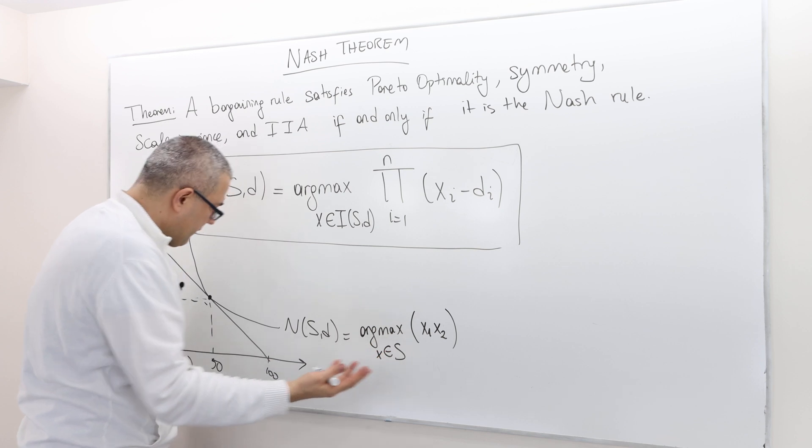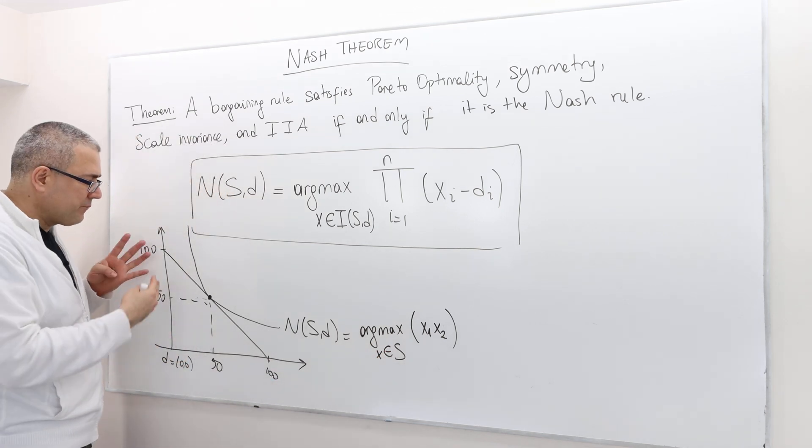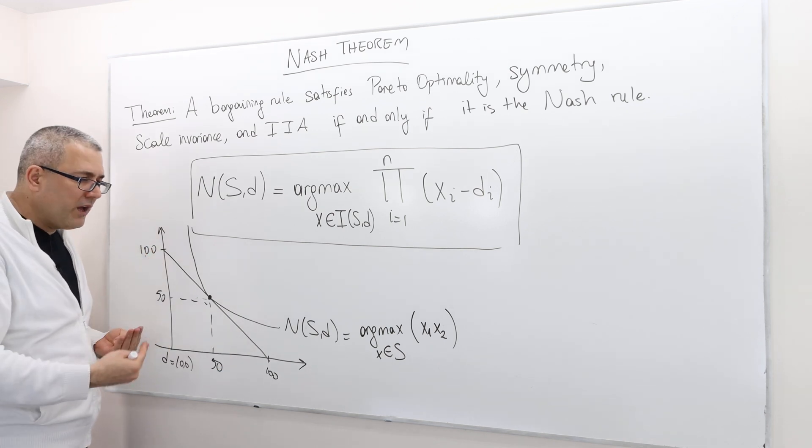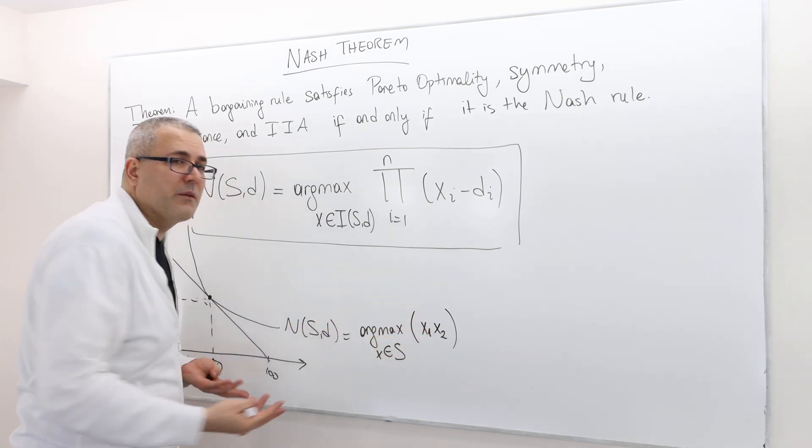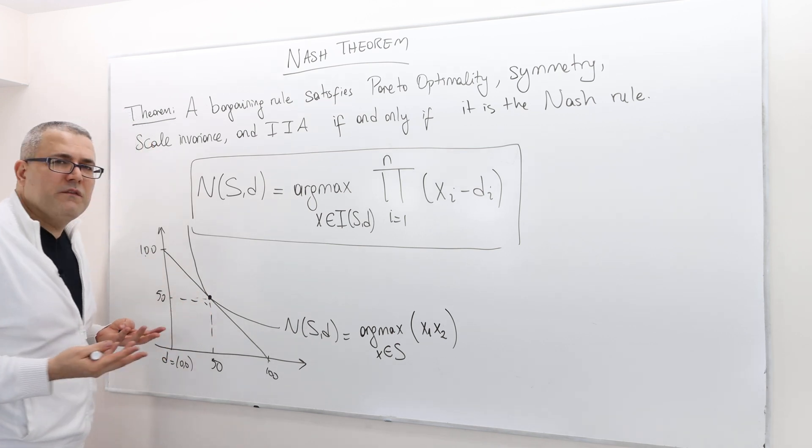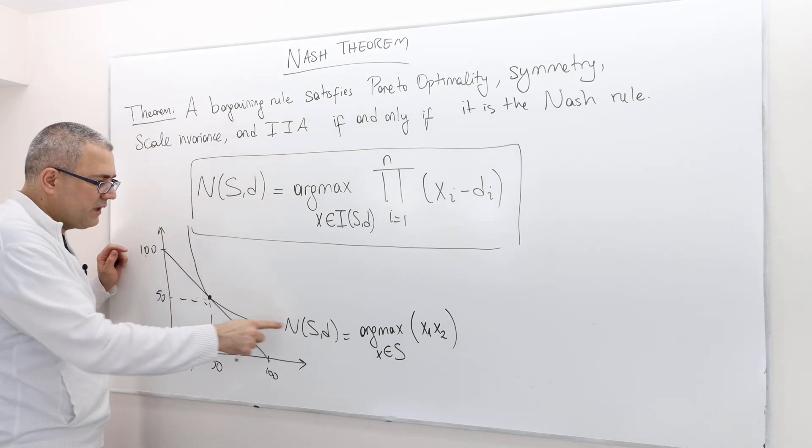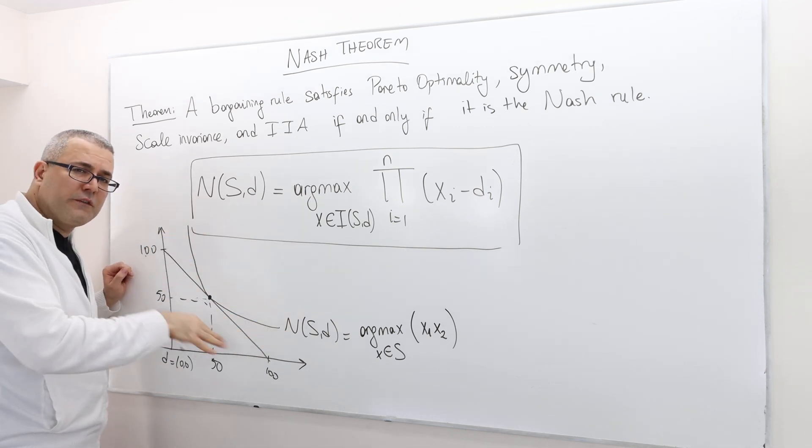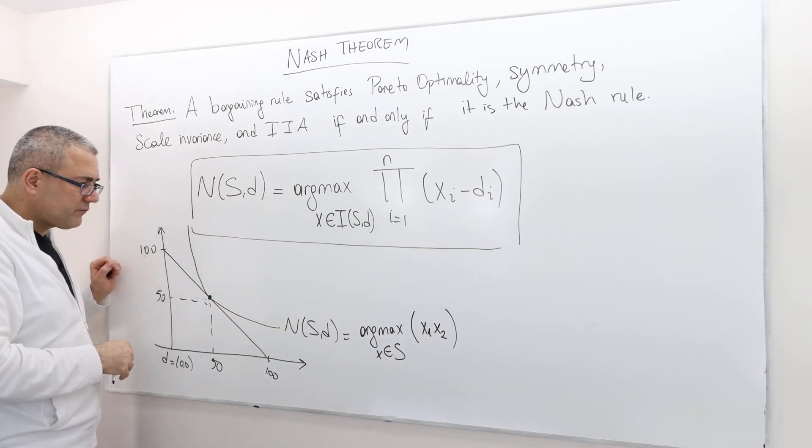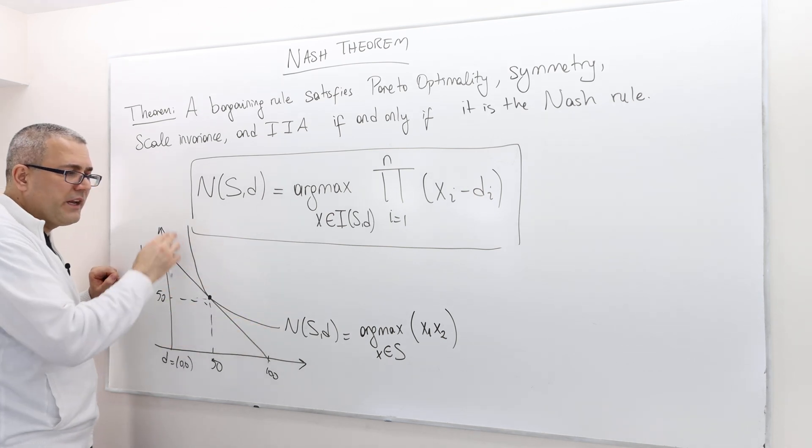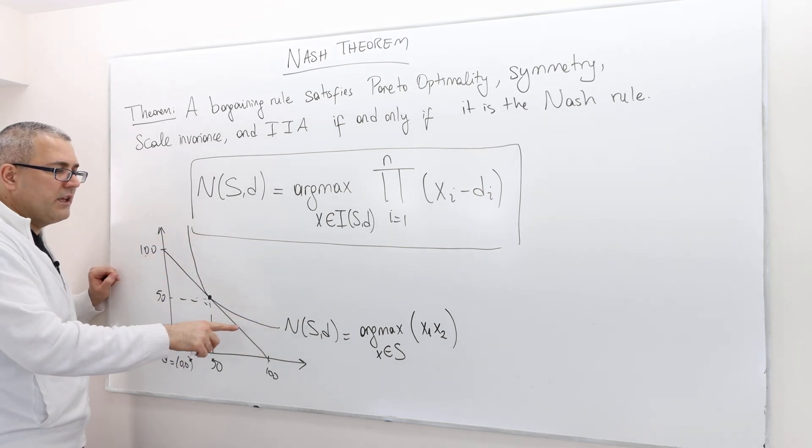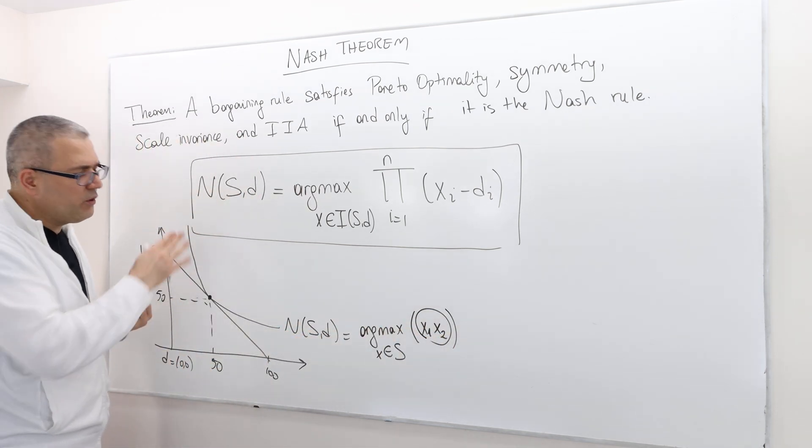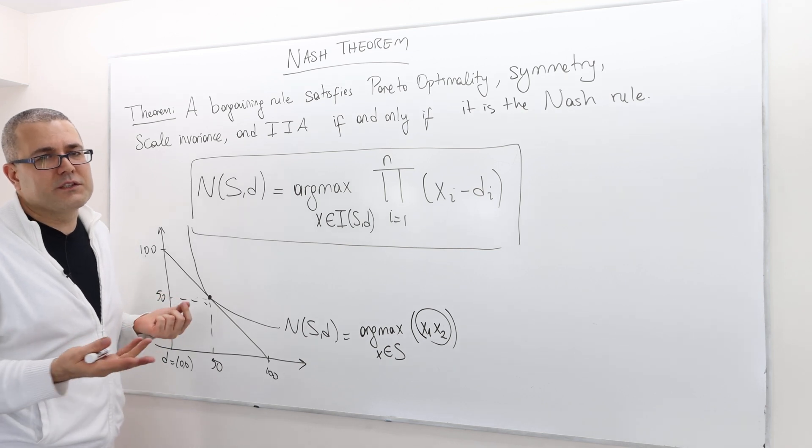So how do you max... So this is very much like a utility maximization problem with a budget constraint, where the utility is X1 times X2, right? So how do we find this problem? Well, simple. This is kind of like an indifference curve.